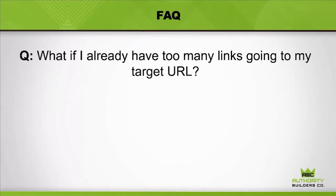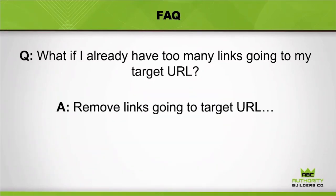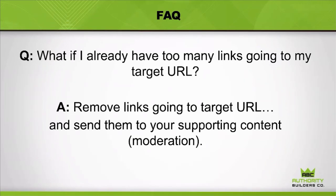FAQ: What if you already have too many links going to the URL you want to rank? You've already cooked that URL. You need to remove the links going to your target URL — you'll simply be fighting an uphill battle otherwise. There's nothing else you can do unless you want to build links to everyone else on page one to make yourself look more normal, which certainly wouldn't be efficient. If you want to save those links built through outreach, you could move a few of them to your supporting content, but do this in extreme moderation — it's a weird signal to change the target URLs of links, so only do it a handful of times.